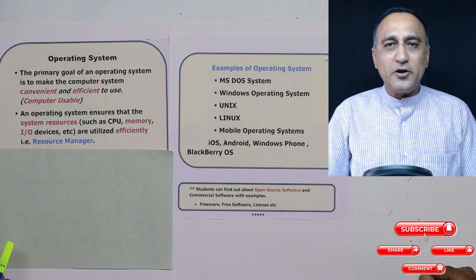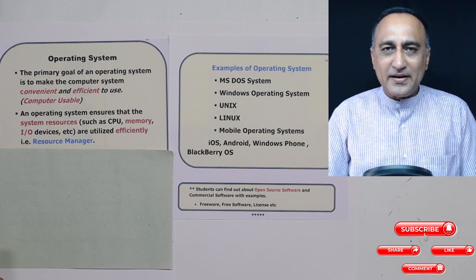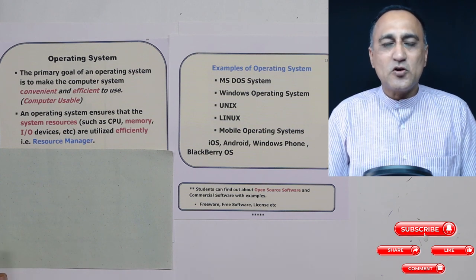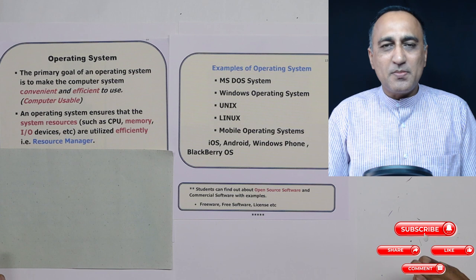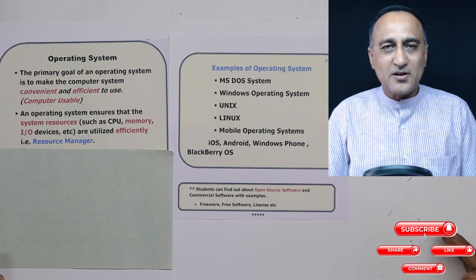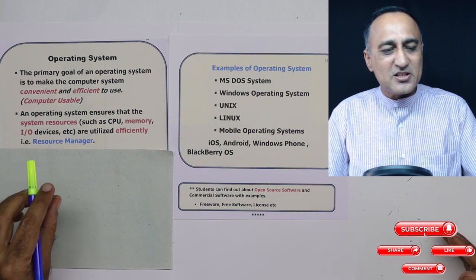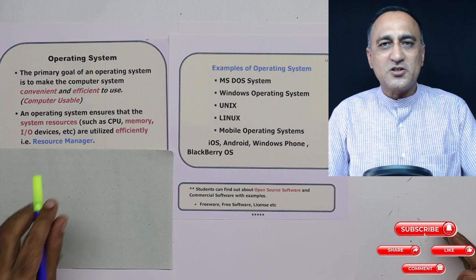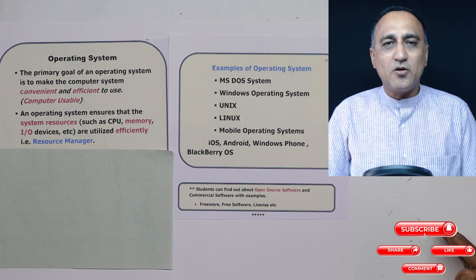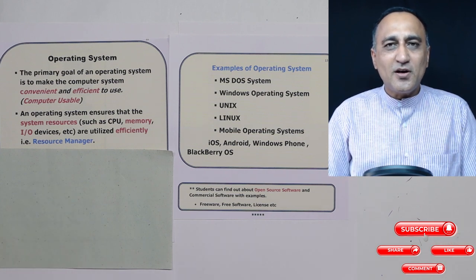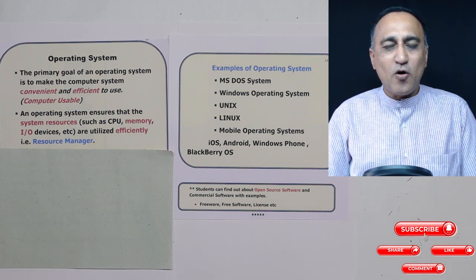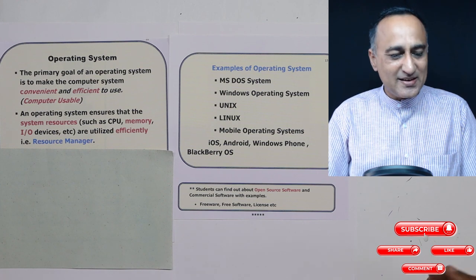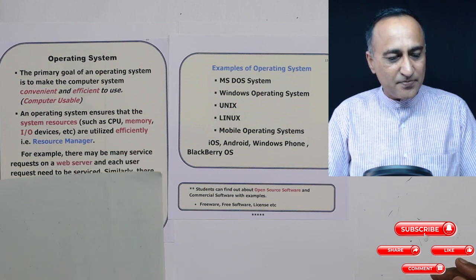You will have an entire subject called operating systems in your computer science degree, probably in the fourth or fifth semester. So this is a 50,000-feet-high view — similar to the functional diagram of a computer — of what exactly an operating system is.